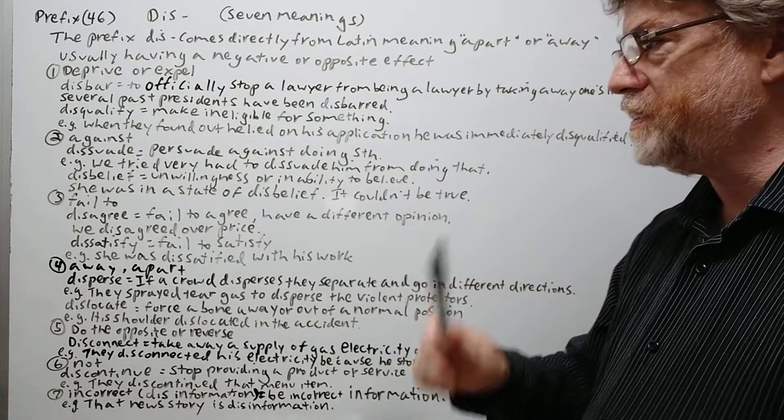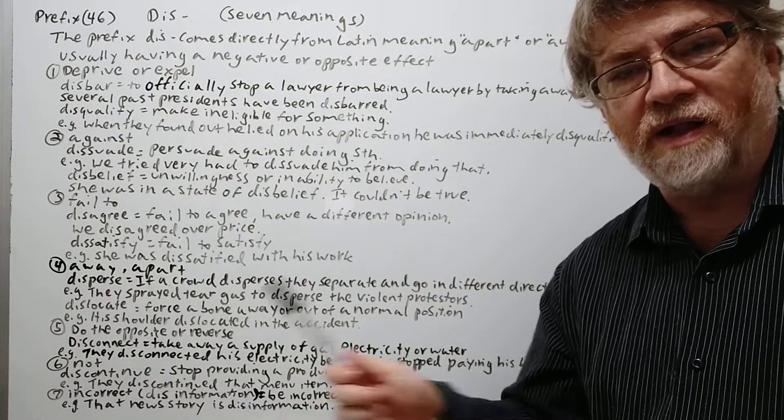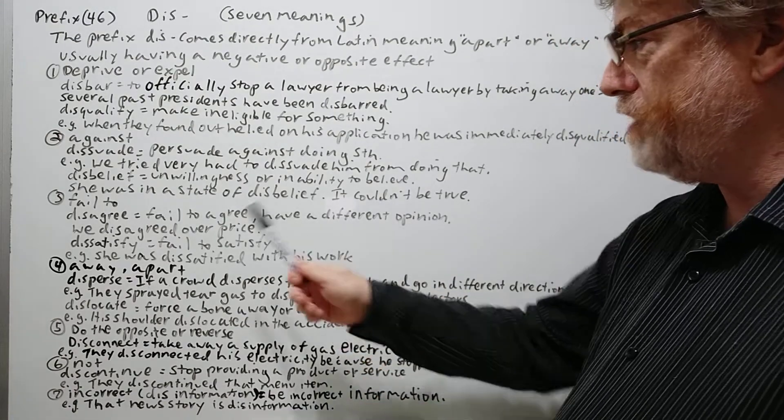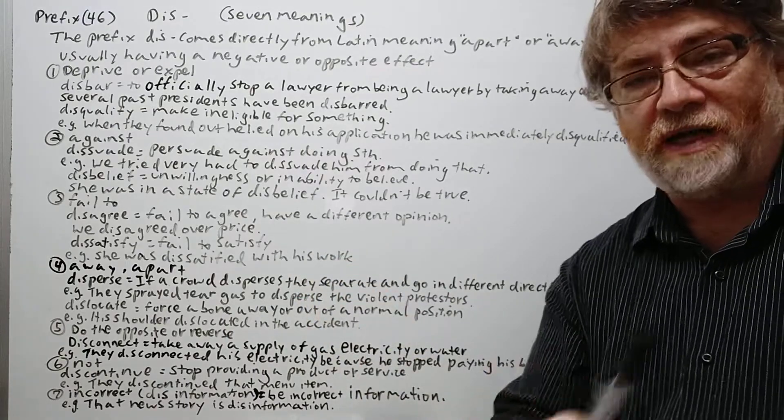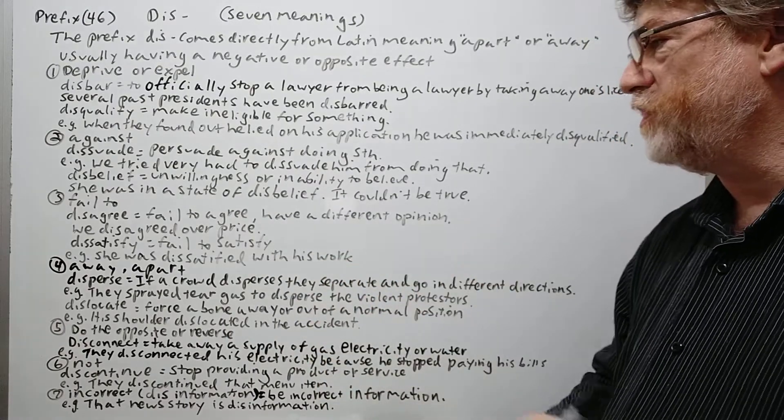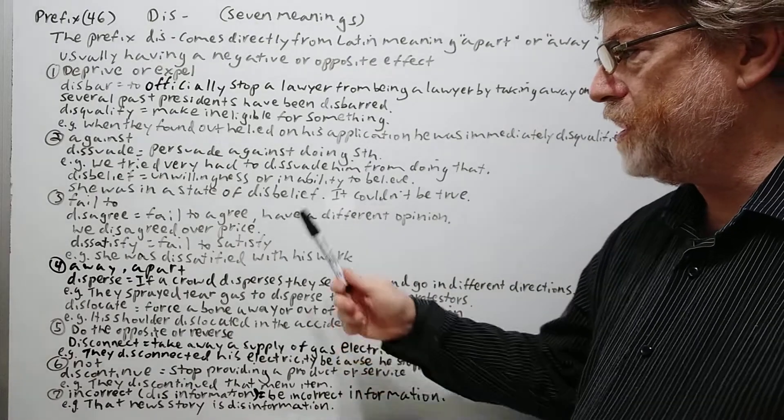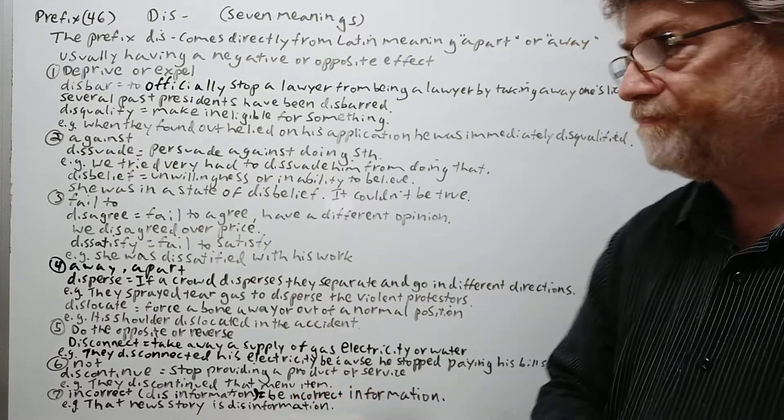The third one here has to do with if you fail to do something. So disagree—well, basically disagree means you fail to agree or you basically have a different opinion. Here's our example: we disagreed over price.